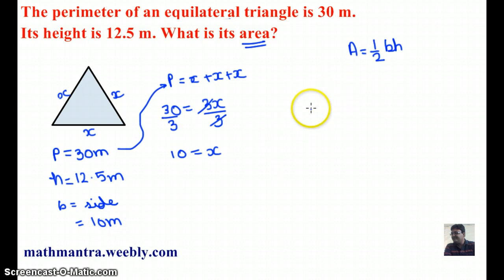I am going to use the information given to me and find out the area of the triangle. Half times 10 times 12.5. That gives me 125 over 2, which is 64.5 meters squared, which is the area of the triangle. Thank you.